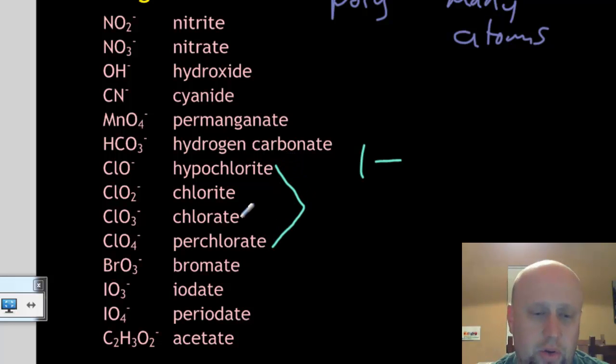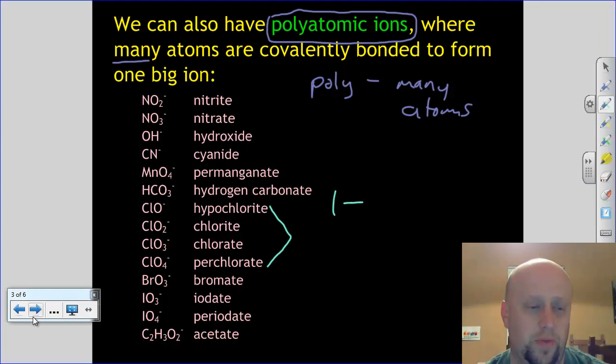You see that a lot of them are sort of related. So we've got chlorate, chlorite, hypochlorite, perchlorate, all of those things. Bromate and iodate, you can see sort of look like chlorate, except that they've got a bromine and iodine in them. So we see some things that are sort of related here. So these are the negative ones. We're going to study these and figure out what all of those are.